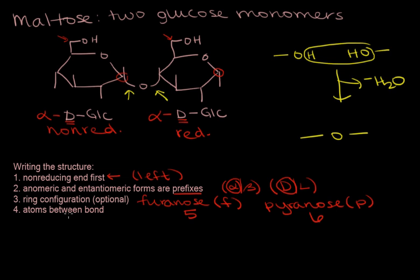Finally, we need to identify the atoms between the bond, and that's exactly like what we did above, keeping in mind that C1 would be the anomeric carbon. CH2OH. So one, two, three, four, five, six. So this would be one through six.